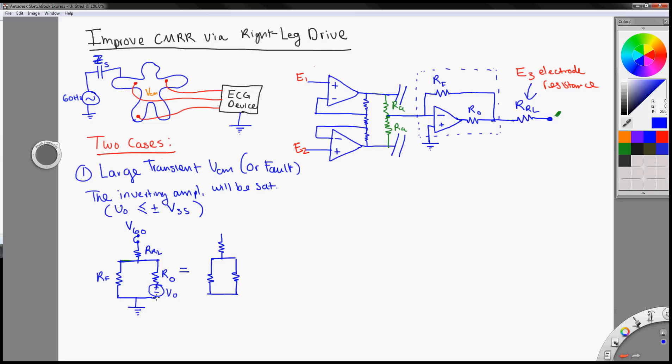Notice how, when you try to find the equivalent resistance of something, all the voltage source becomes shorted. And if you have a current source, it becomes open. Just recall that from circuits theory. So this is the RF, and this is R0, and this is our right leg.